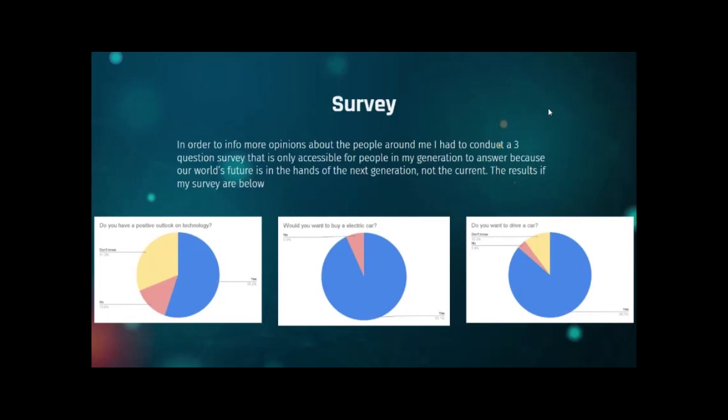In order to get more opinions about the people around me, I had to conduct a three-question survey that is only accessible for people in my generation to answer, because our world's future is in the hands of the next generation, not the current. The results of my survey are below. My survey was three questions. The first question was, do you have a positive outlook on technology? The second is, would you want to buy an electric car? And the third was, do you want to drive a car?